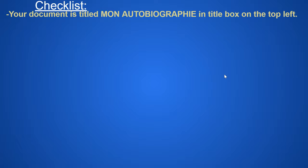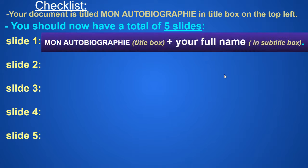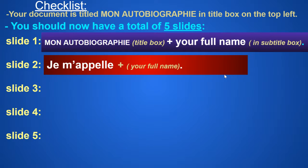For your last nine weeks exam, these are the slides that you should have had already. Slide one was Mon autobiographie in the title box, your full name in the subtitle box. Slide two was Je m'appelle plus your full name. Don't forget, every sentence needs to start with uppercase letter and end with a period.